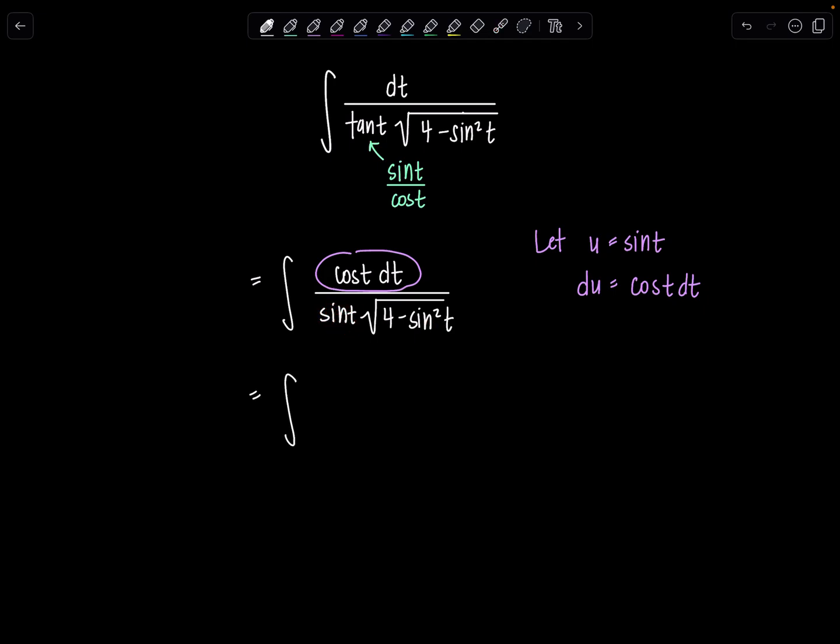So let's make our substitution. Now I just have du in the numerator over u times the square root of 4 minus u squared. And then from here the substitution fun has come to an end in terms of u sub, but now it's time for a trig sub. Exactly.